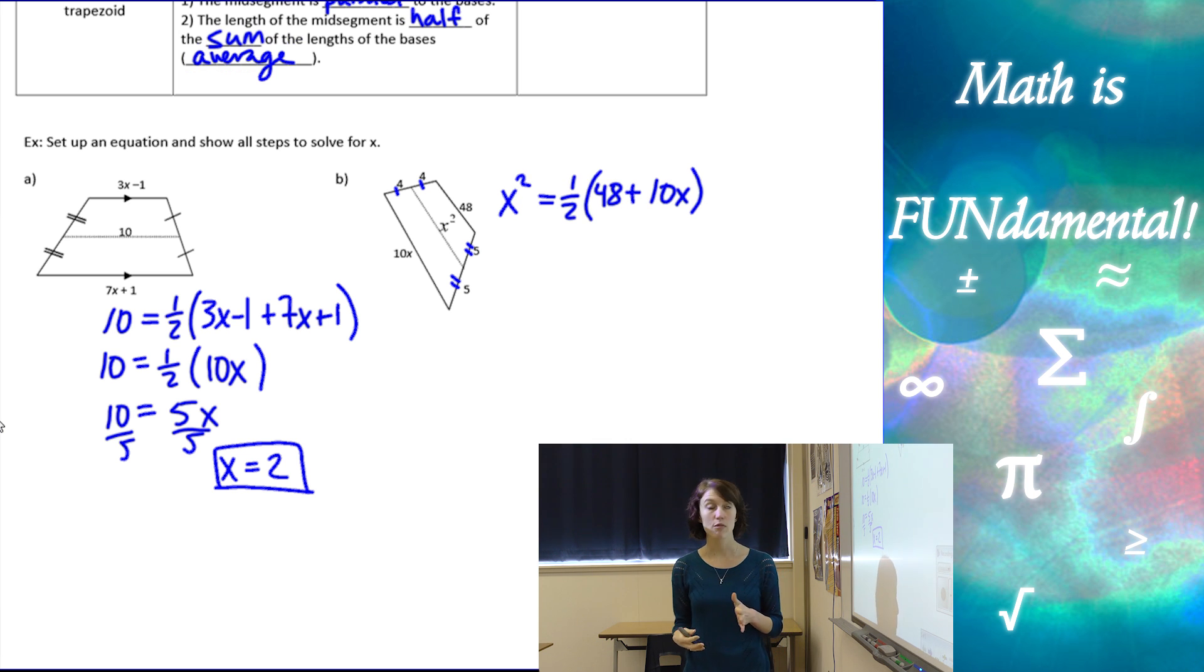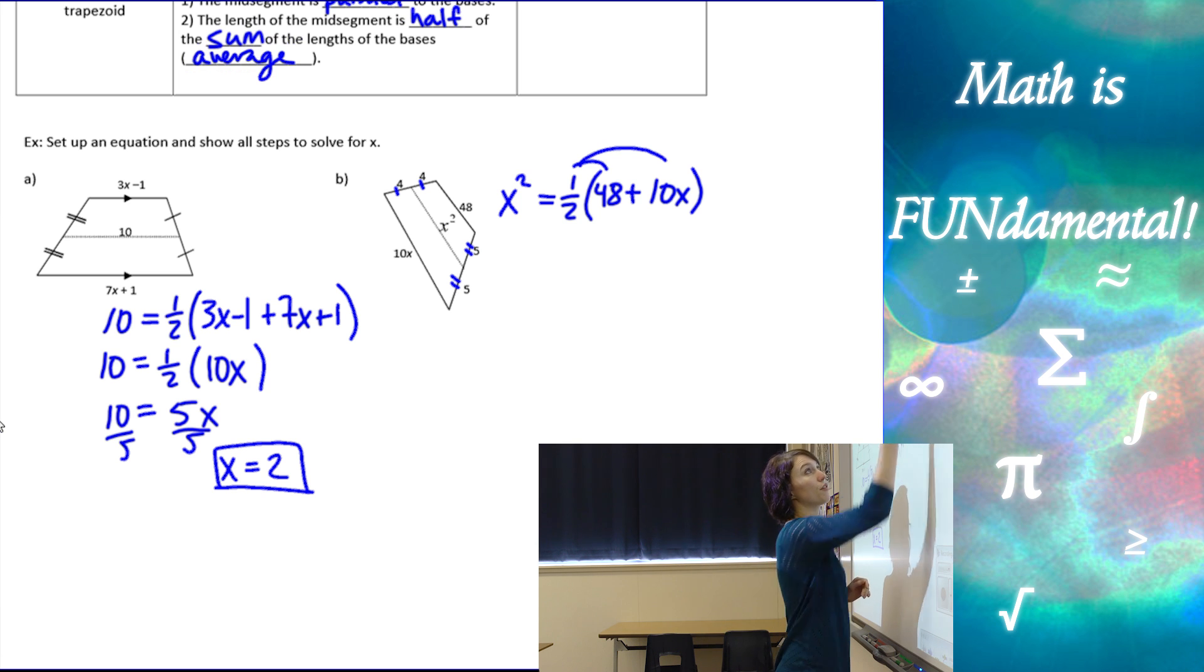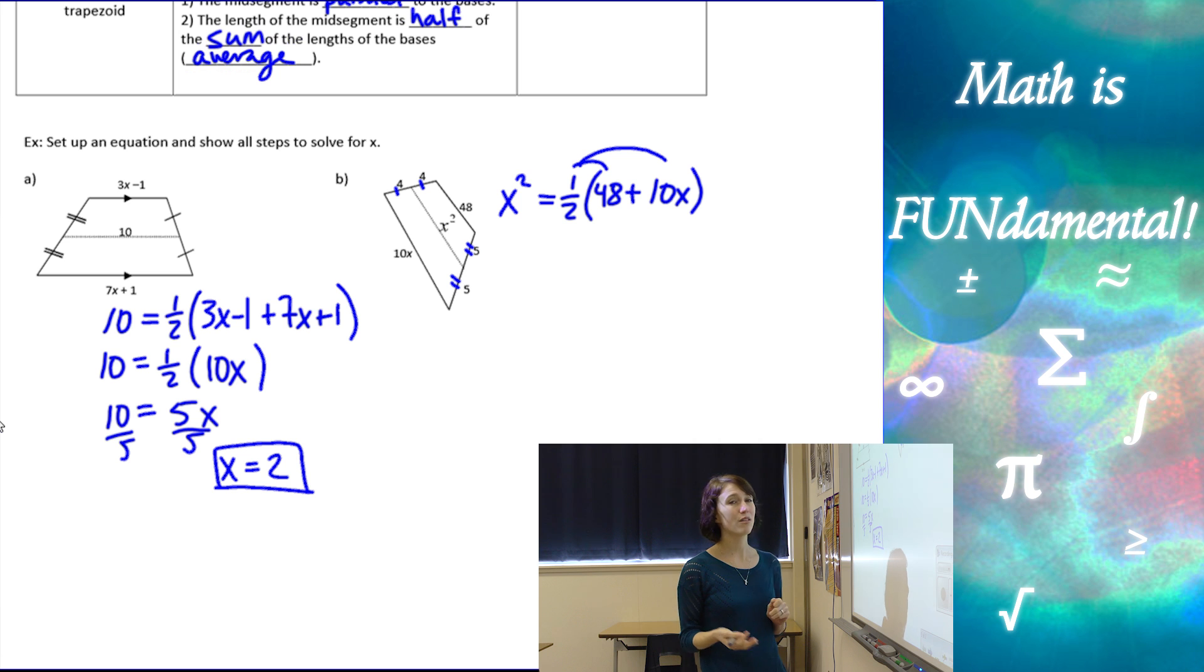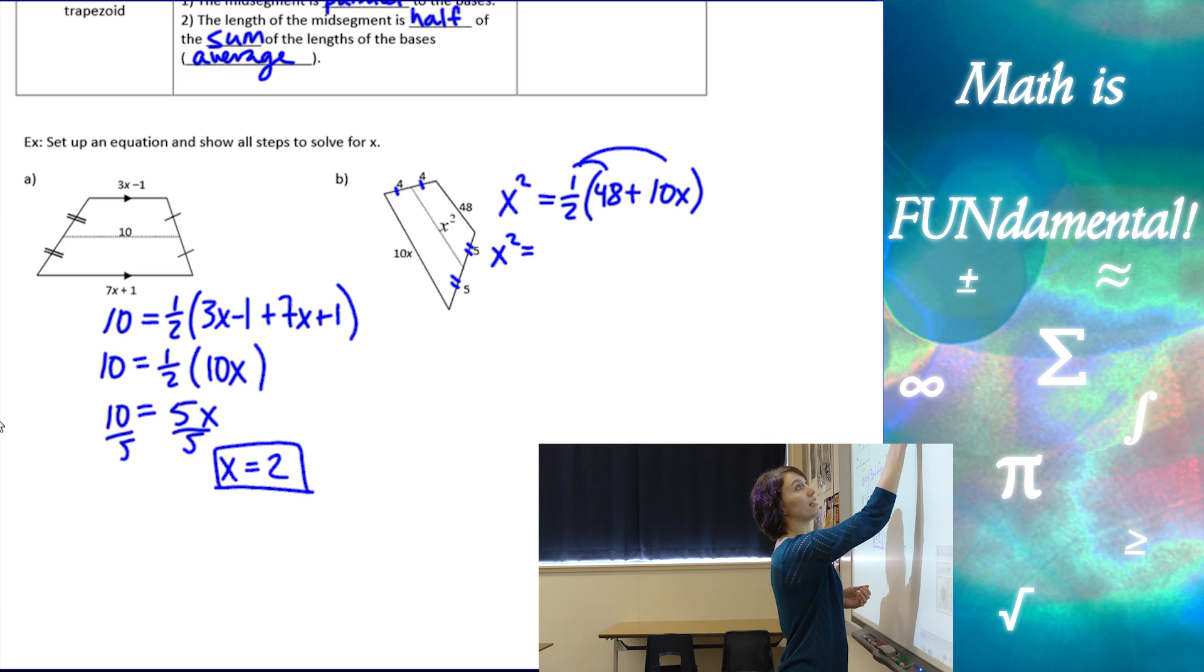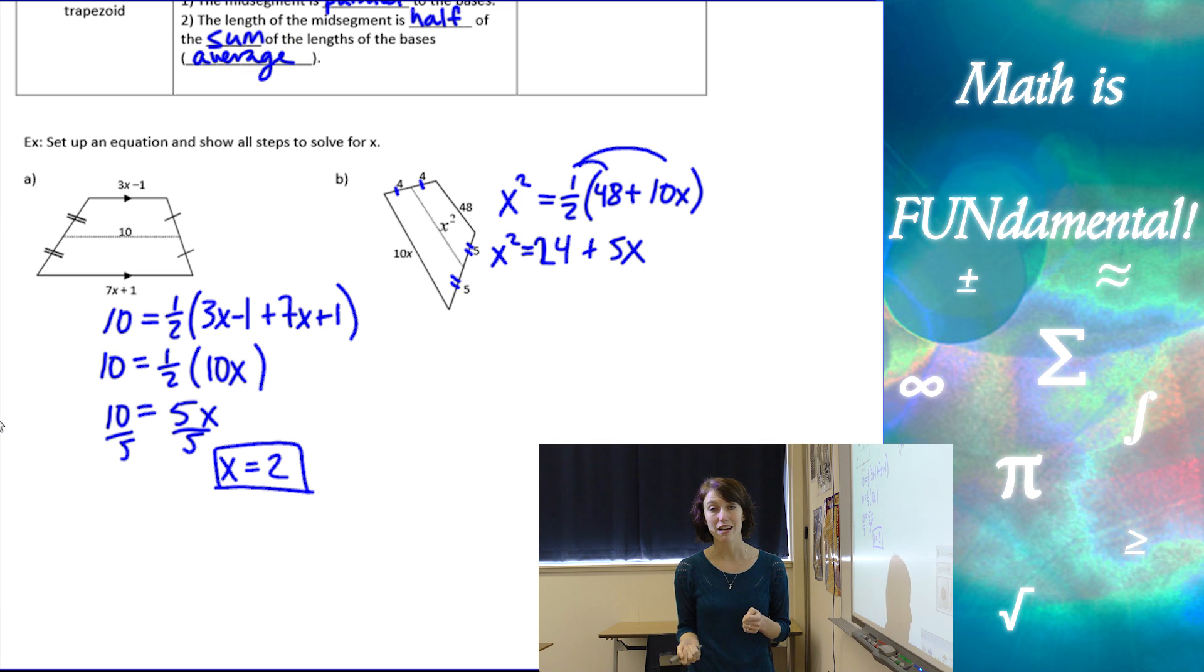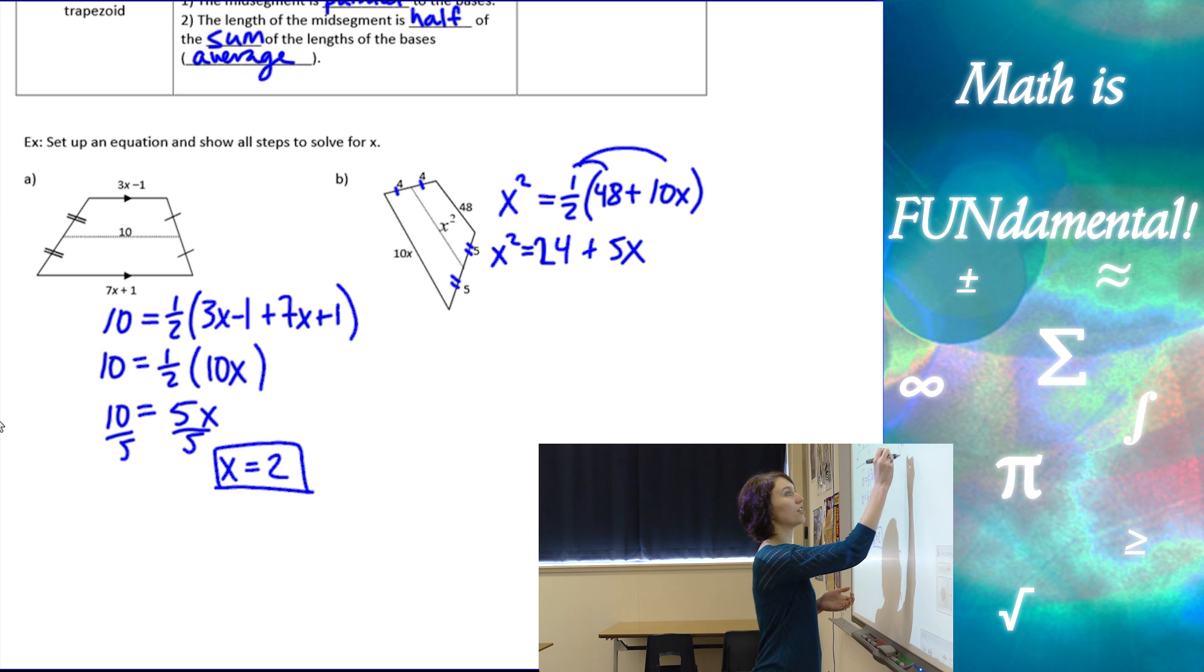The length of the mid-segment equals half of the sum of 48 and 10x. Alright, so from here, we can distribute that one half in. Since both of those are even numbers, it's a little easier. If they weren't even, we could have just multiplied both sides of our equation by two to get rid of the one half. But, these are even, so it's nice and equal. So, half of 48 is 24 plus 5x. Now, if you notice, we have a quadratic equation to solve here, which means, we've got to think all the way back to algebra, we need to subtract and move everything over to one side of the equation.